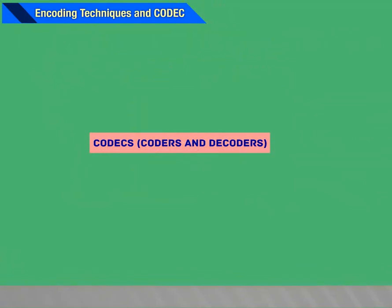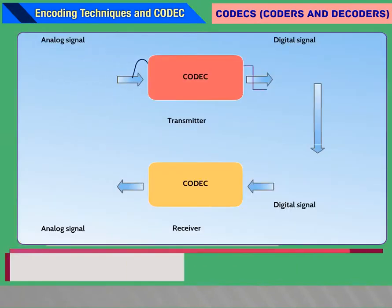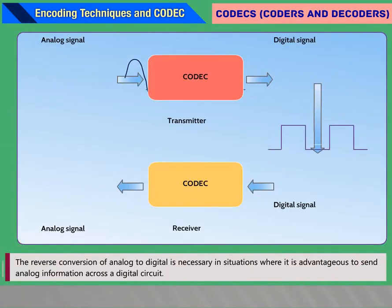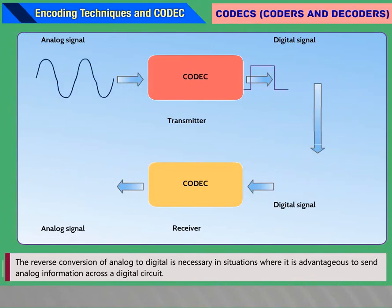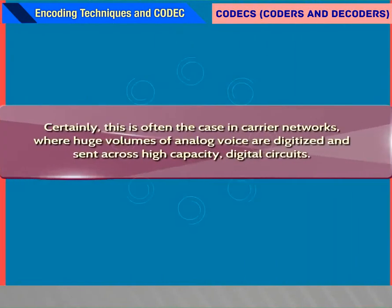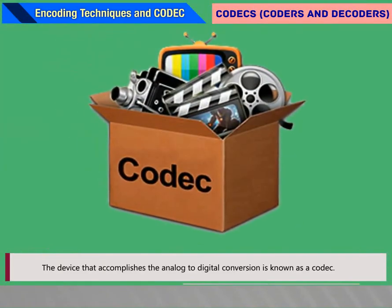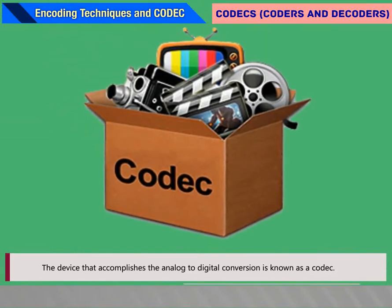Codecs (coders and decoders) stand for coder/decompression in data communication. The reverse conversion of analog to digital is necessary in situations where it is advantageous to send analog information across a digital circuit. This is often the case in carrier networks where huge volumes of analog voice are digitized and sent across high-capacity digital circuits. The device that accomplishes analog-to-digital conversion is known as a codec. Codecs are widely used to convert analog voice and video to digital format and to reverse the process on the receiving end.